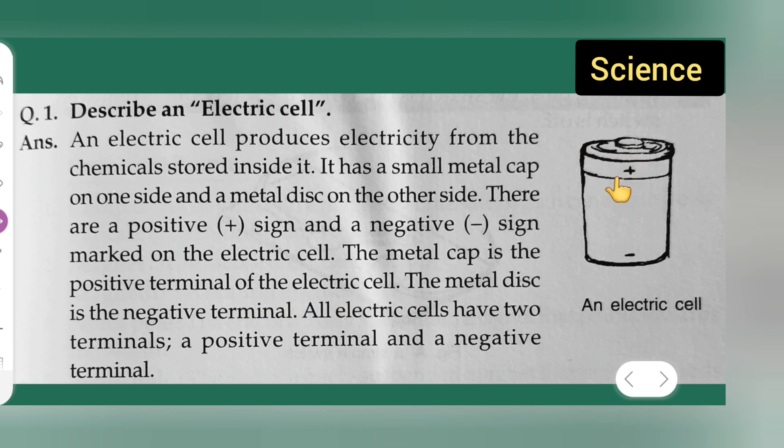The metal disc is the negative terminal. All electric cells have two terminals: a positive terminal and a negative terminal.